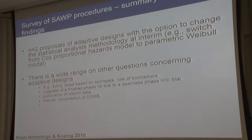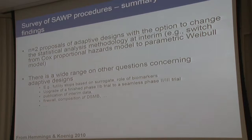There were also two proposals of adaptive designs with the option to change the statistical analysis methodology at interim. For example, one sponsor proposed switching from a Cox proportional hazard model to a parametric survival model. If I remember correctly, this strategy was discouraged at that time. There is also a wide range of other questions concerning adaptive designs — for example, which firewalls should be used, the composition of the DSMB, or whether interim data can be published.